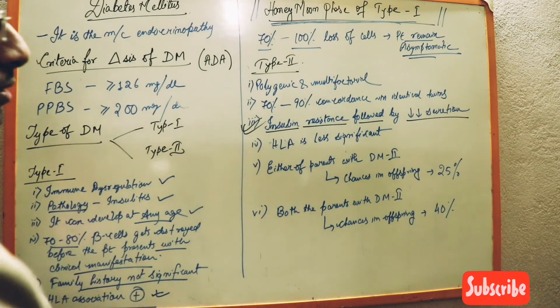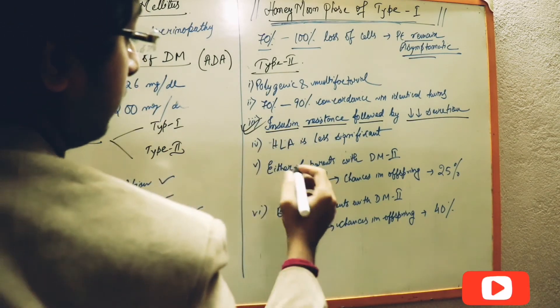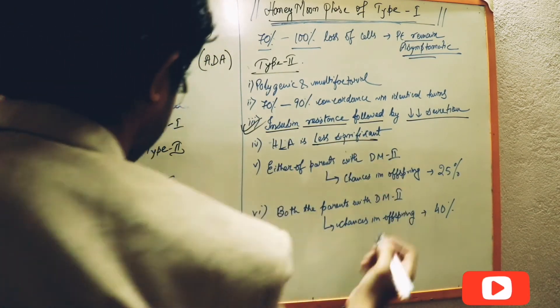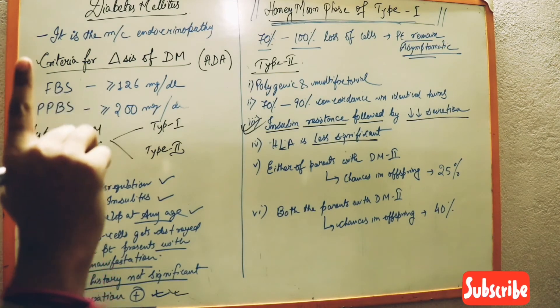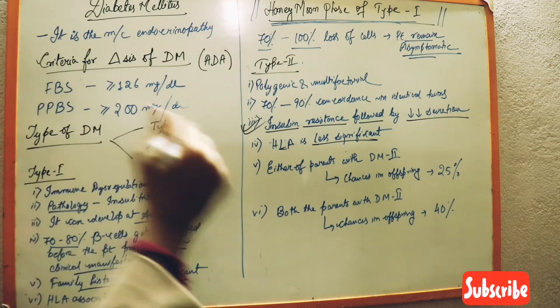Now HLA is less significant here. We saw that HLA is most significant in diabetes mellitus type 1, but in case of diabetes mellitus type 2, HLA is less significant.